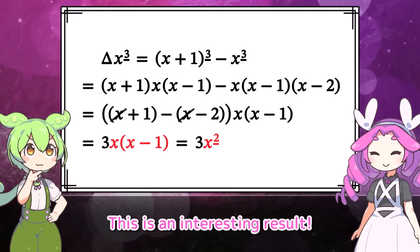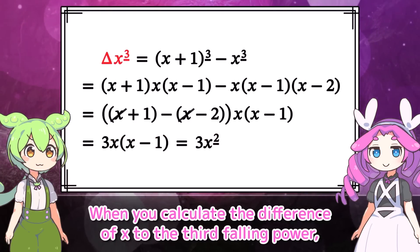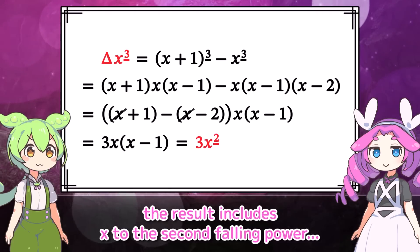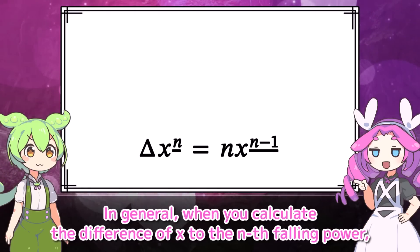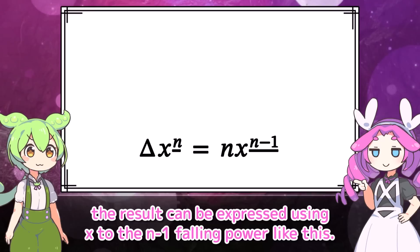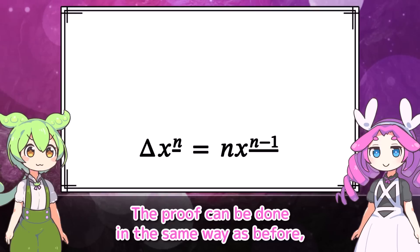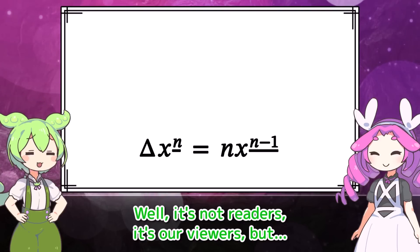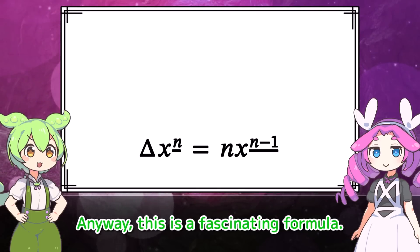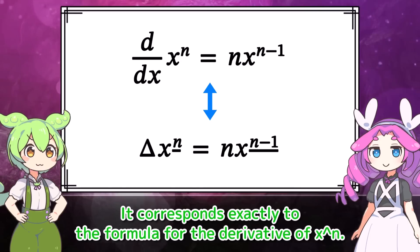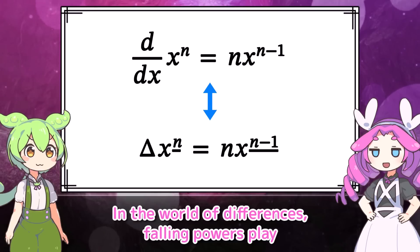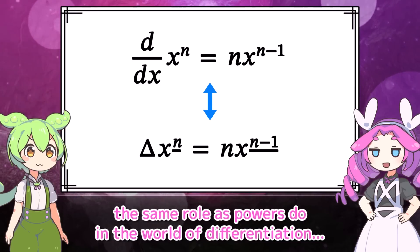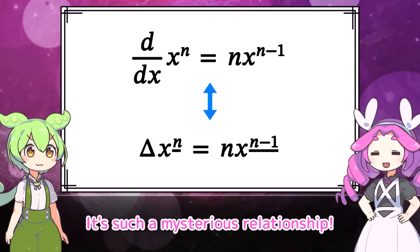This is an interesting result. When you calculate the difference of x to the third falling power, the result includes x to the second falling power. In general, when you calculate the difference of x to the nth falling power, the result can be expressed using x to the n minus 1 falling power. The proof can be done in the same way, so we'll leave it to viewers. This is a fascinating formula — it corresponds exactly to the formula for the derivative of x to the n. In the world of differences, falling powers play the same role as powers do in the world of differentiation.